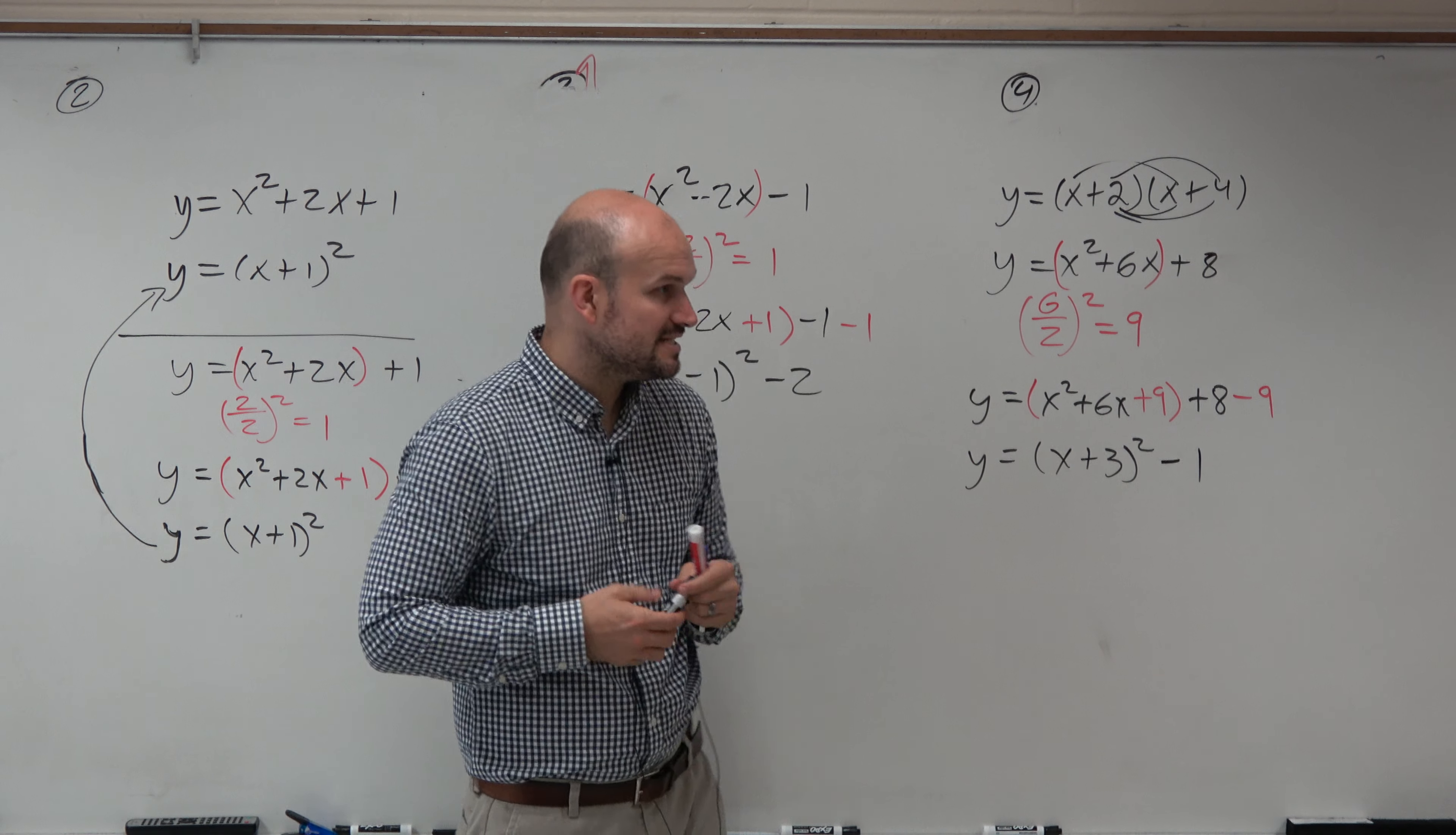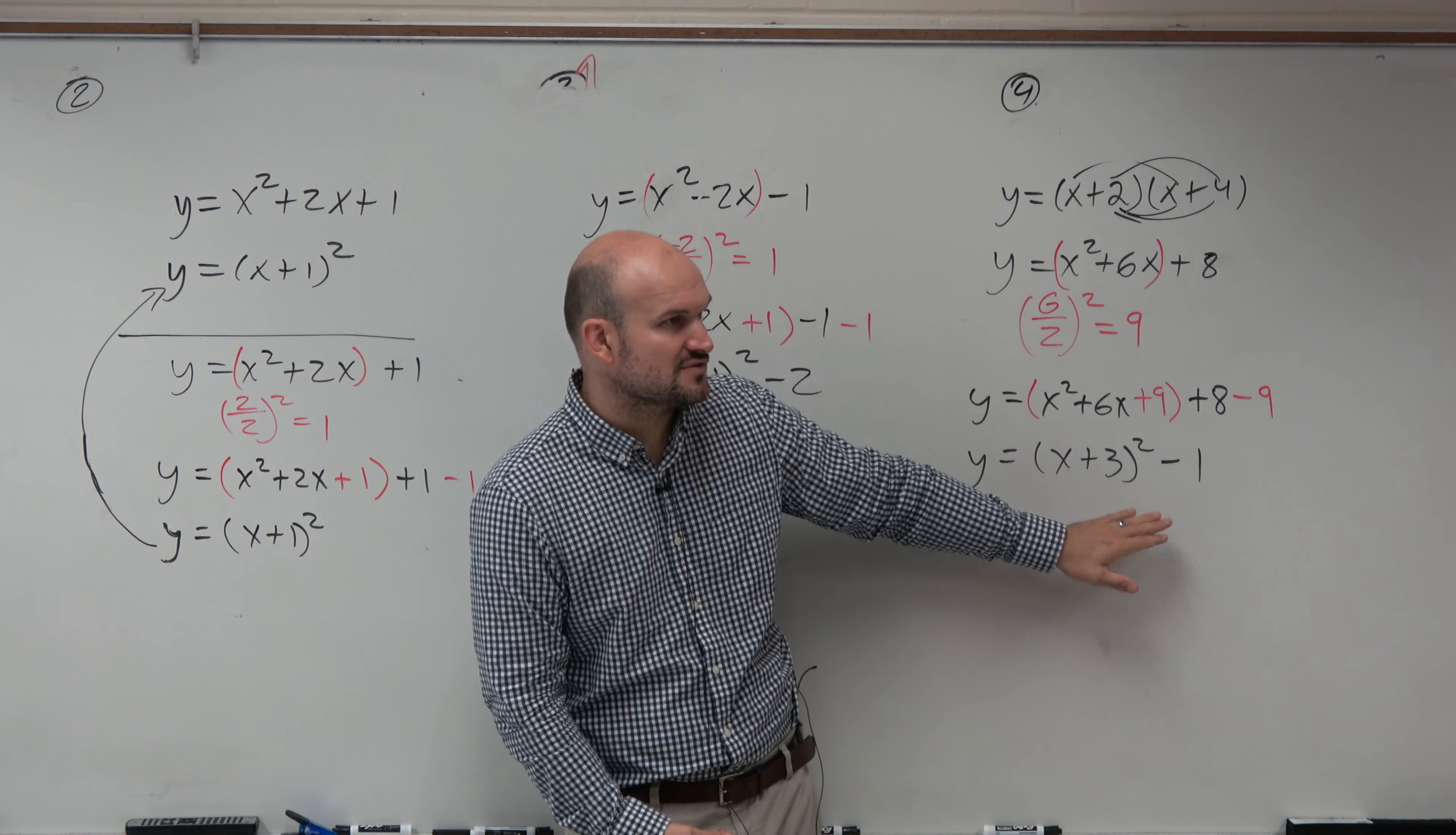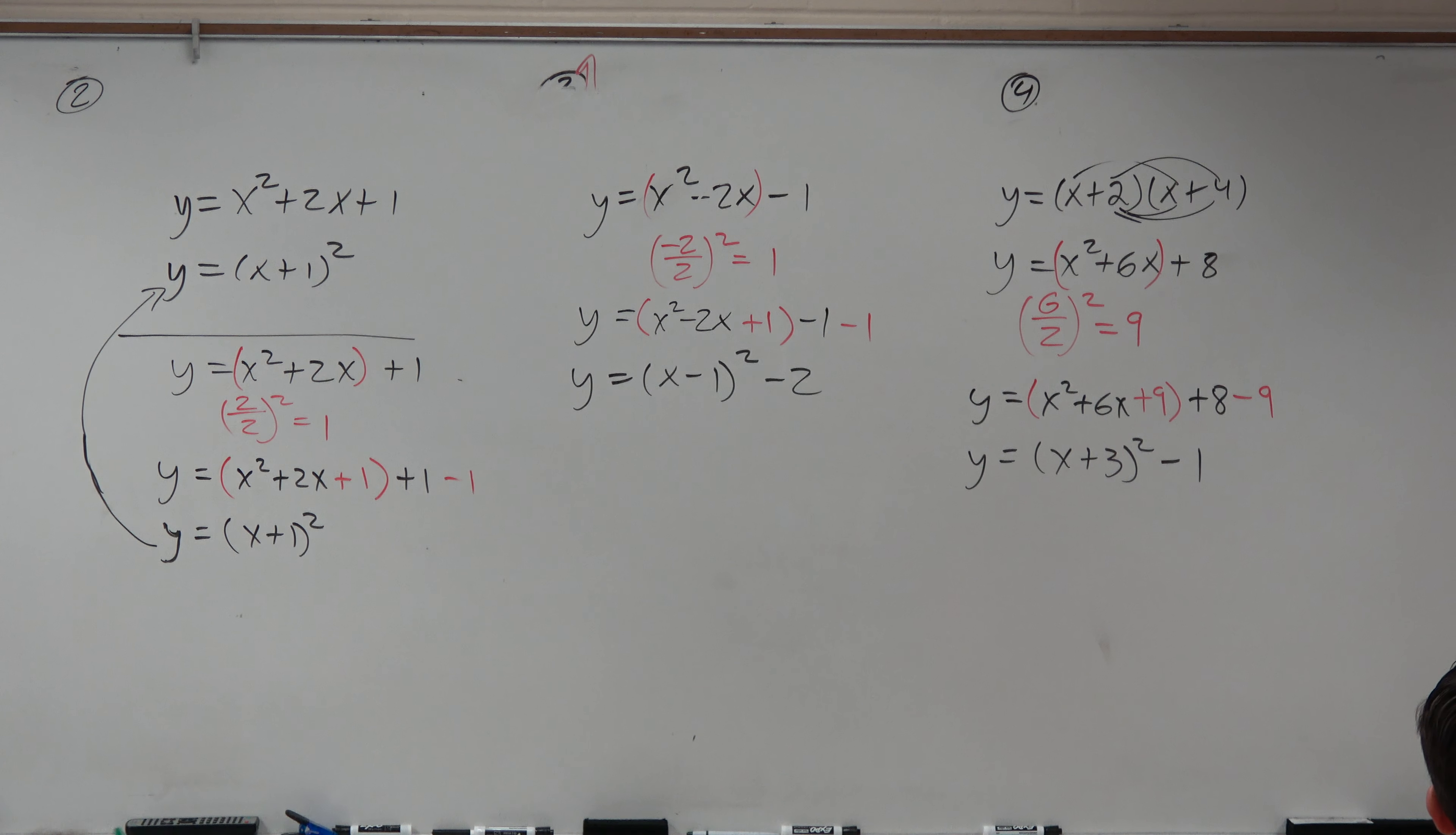And now is that pretty easy to find the vertex and all the other kind of transformations? Yeah. That's not easy to find the transformations. That's easy to find the zeros, but not the transformations. Right? So that's why a lot of times, that's why the vertex form or creating that binomial squared is going to be helpful for us.